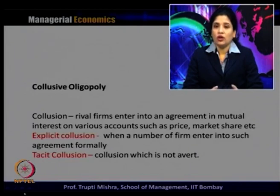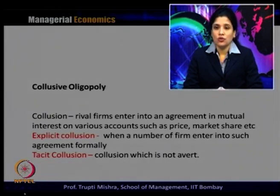Explicit collusion is where a number of firms enter into such an agreement formally. Tacit collusion is collusion which is not overt, but the firms are still in collusion. Tacit collusion comes into picture because there is no legalized version of collusion — after OPEC as a cartel, there is no legal form of cartel that exists. Whatever form of collusion exists is in tacit form. The explicit form is where firms formally agree to work together for joint profit maximization; the other is tacit collusion where collusion is not overt.